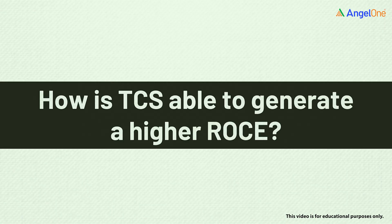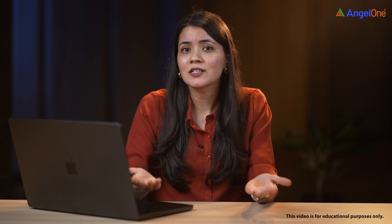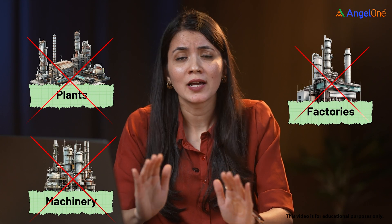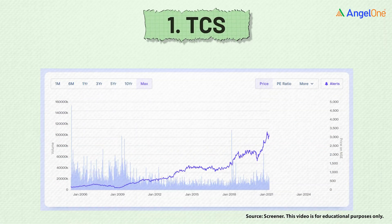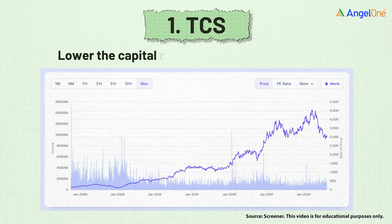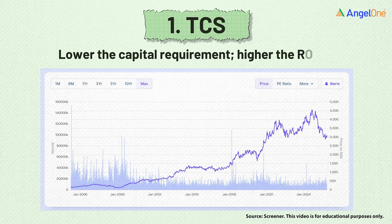But how is TCS able to generate such a high ROCE? The answer lies in its business model — it's an asset-light business that doesn't need any factories, plants, or machinery, just people. In service businesses like TCS, capital needs are lower, which allows them to convert every rupee of capital into profit far more efficiently. So one thing is clear: the lower the capital requirement in a business, the higher the ROCE, and vice versa.